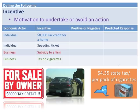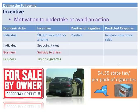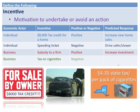Looking at specific examples: an $8,000 tax credit for a home is a positive incentive that would predictably increase home consumption. A speeding ticket is a negative incentive or disincentive that motivates safer or slower driving. Government subsidies for firms are a positive incentive to produce. A tax on cigarettes is a negative incentive designed to dissuade both producers and consumers from engaging with that market.